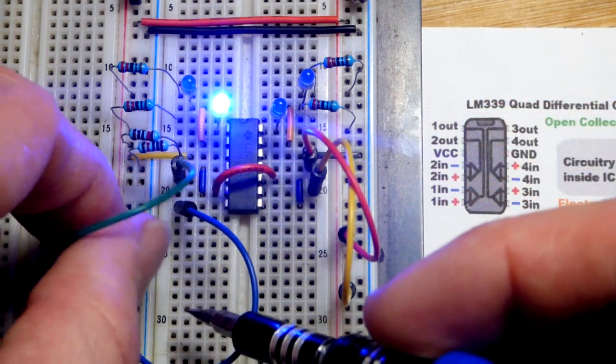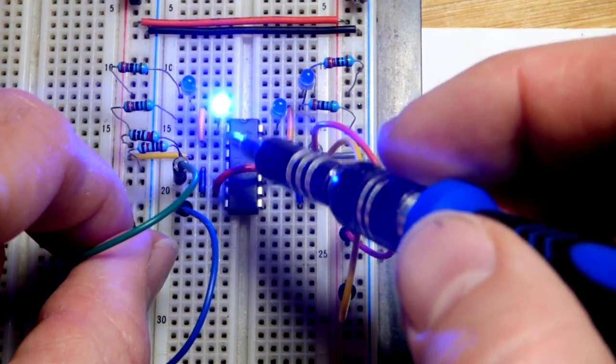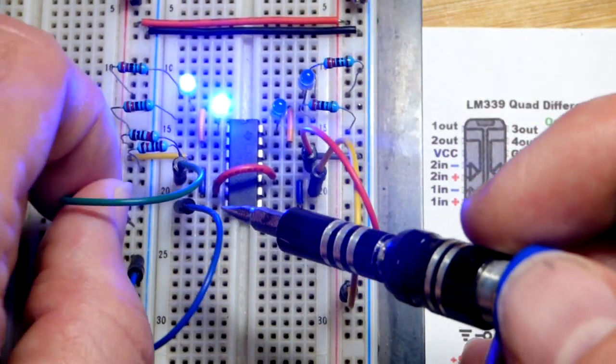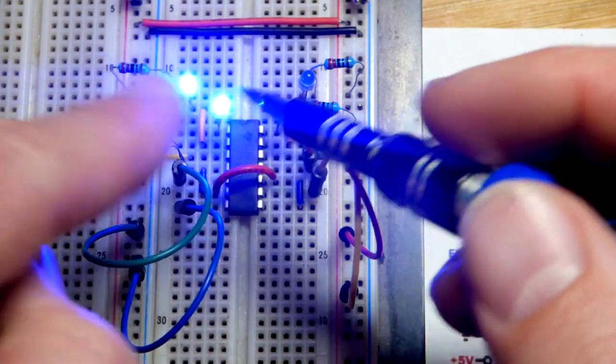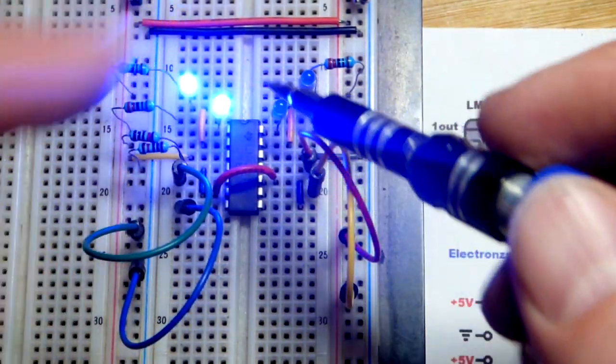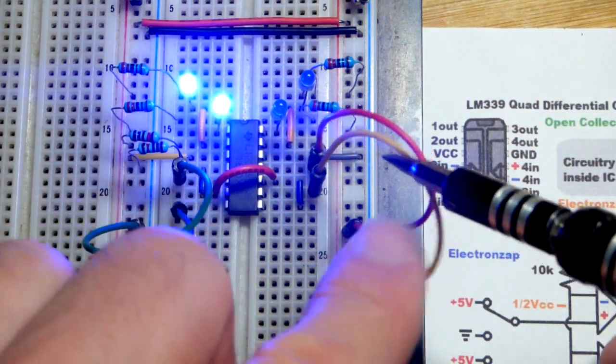So right above it is comparator number two. And so that's the slightly lower output, but it has the jumper going up to that blue LED right there. So we could wire up really easily so that these line up more or less.